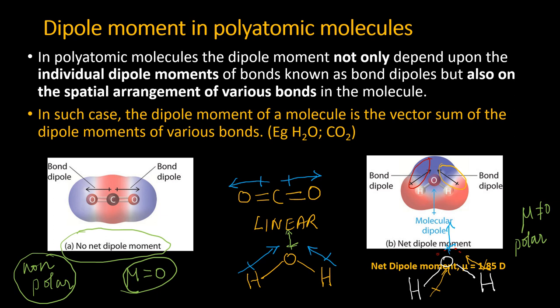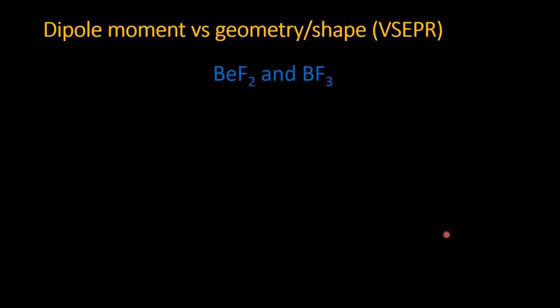Comparing beryllium difluoride (BeF₂) and boron trifluoride (BF₃): BeF₂ has a linear geometry, similar to CO₂. Fluorine is electronegative, so each bond dipole points toward fluorine, but the two dipoles cancel each other because of the linear arrangement. Therefore, the net dipole moment of BeF₂ is zero.